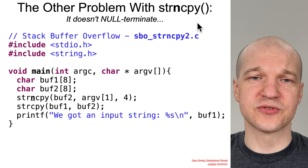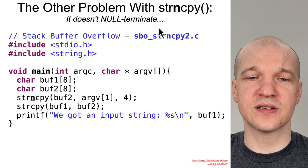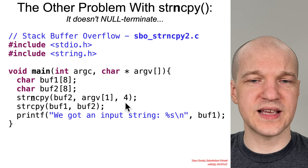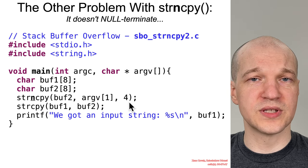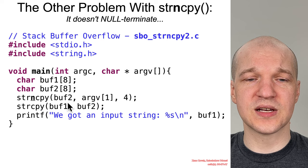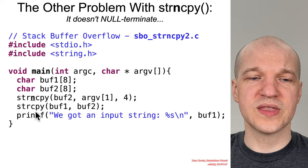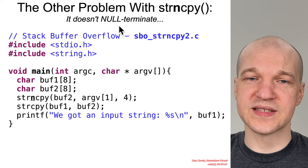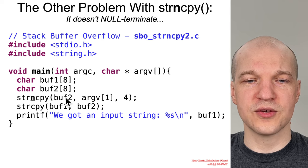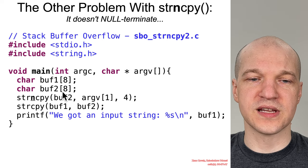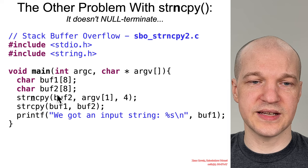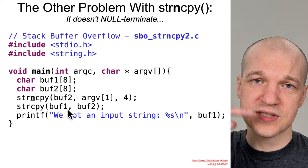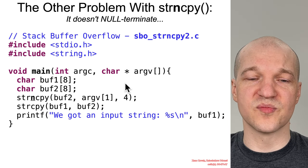There's another problem with strncpy: it doesn't actually null-terminate. You could get into a situation where the copy itself is okay — you're limiting it to four characters, so it's definitely not going to overflow buff two. But if it's followed up with some further unsafe operation, because strncpy does not guarantee null termination, you could have four characters in the buffer and whatever the rest of the uninitialized content of buff two is, there might not be a null character there. So when strcpy hits it, it could just keep copying well past the bounds of buff one.